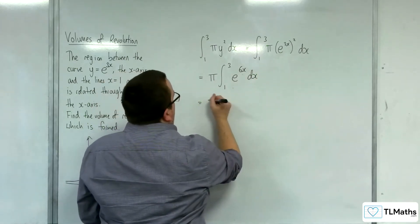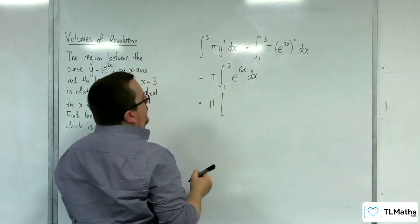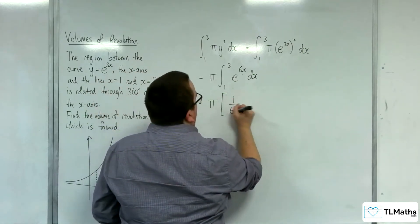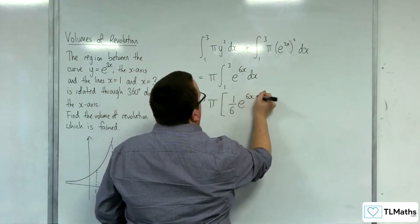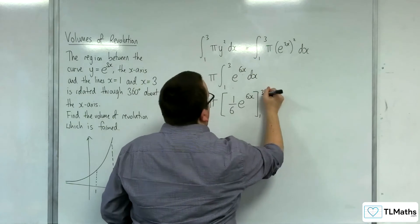So integrating that, we're going to have pi times one-sixth e to the 6x, evaluated between 1 and 3.